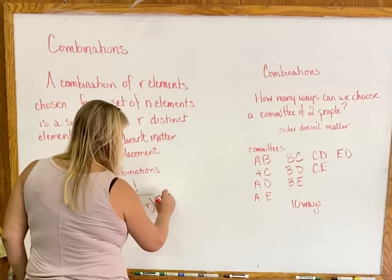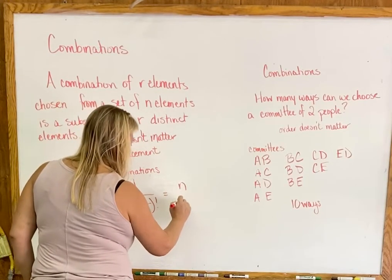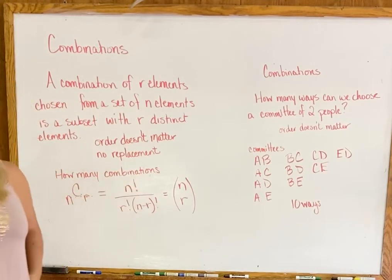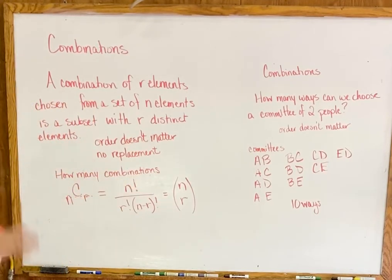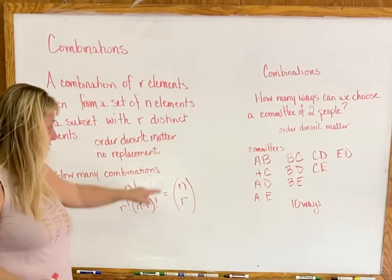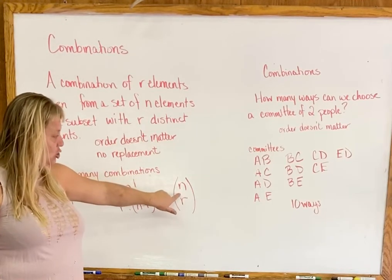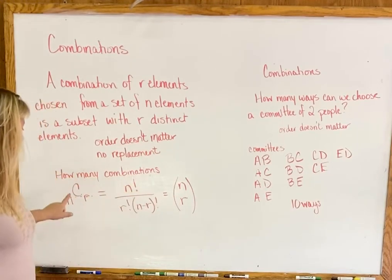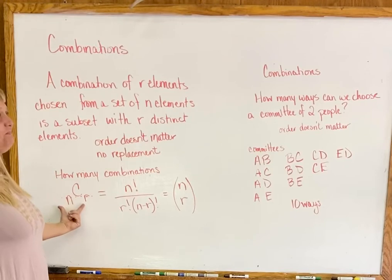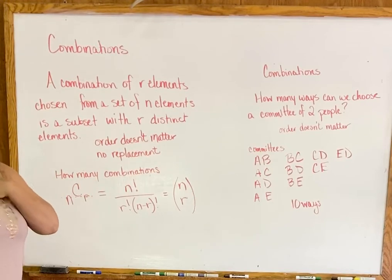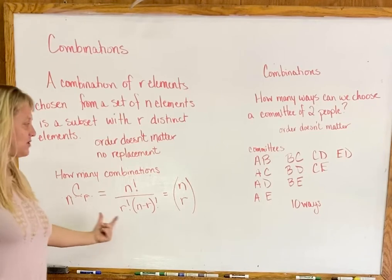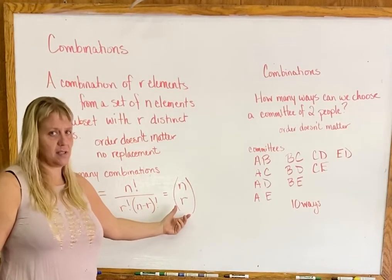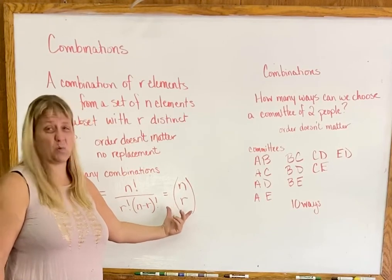Another notation looks like N over R in parentheses — but it's not a fraction, there's no line. This is read 'N choose R.' Everyday people use the NCR notation, but mathematicians use this parenthesis notation. You need to get used to it because it's what appears in the book.